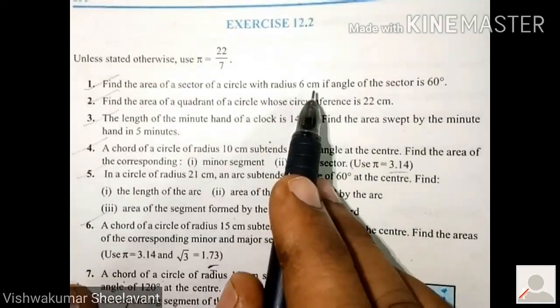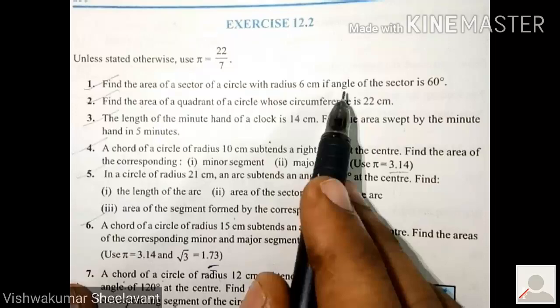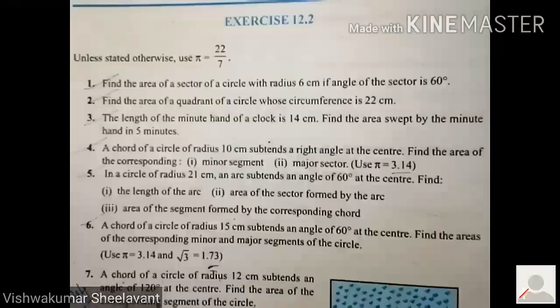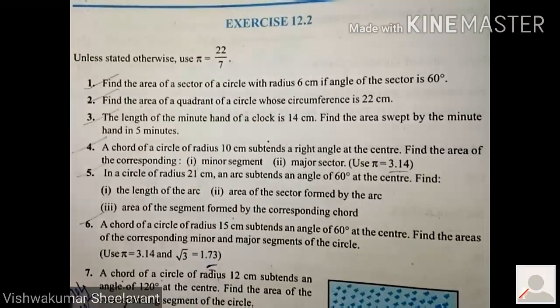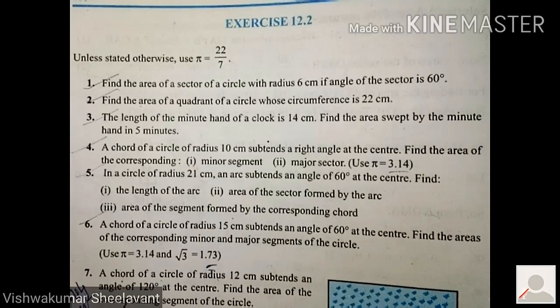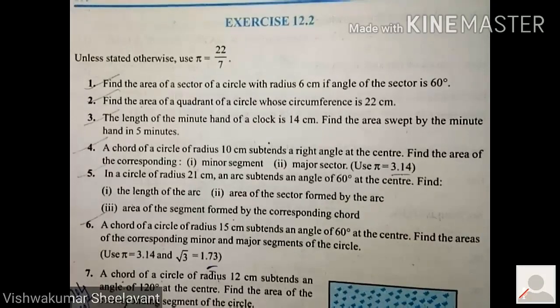Find the area of a sector of a circle with radius 6 centimeter if the angle of the sector is 60 degree.